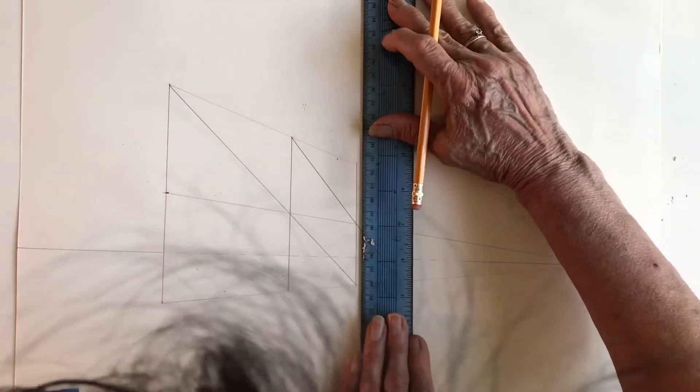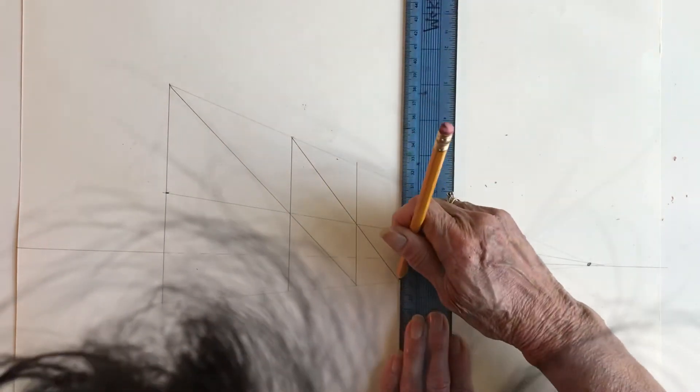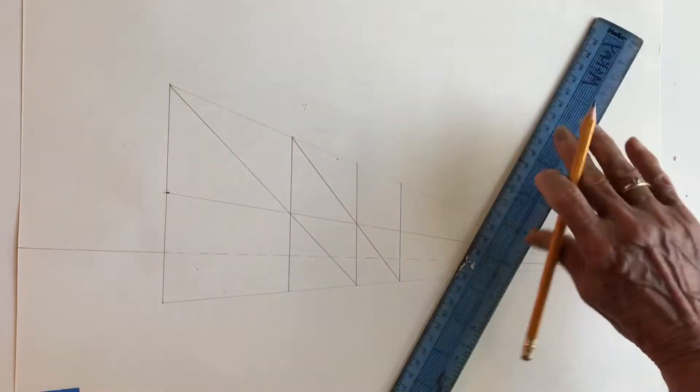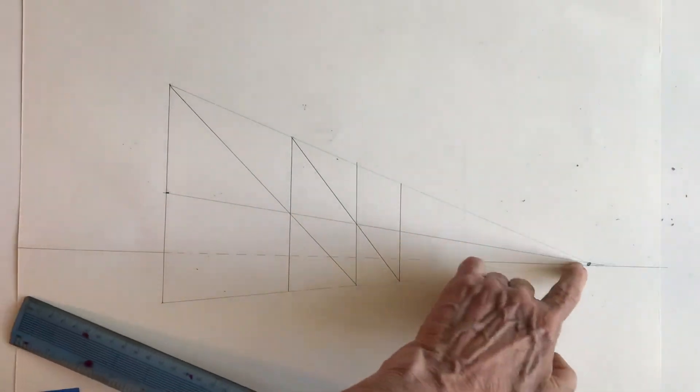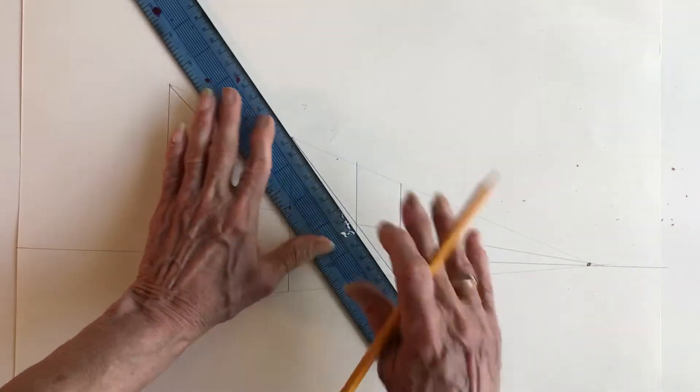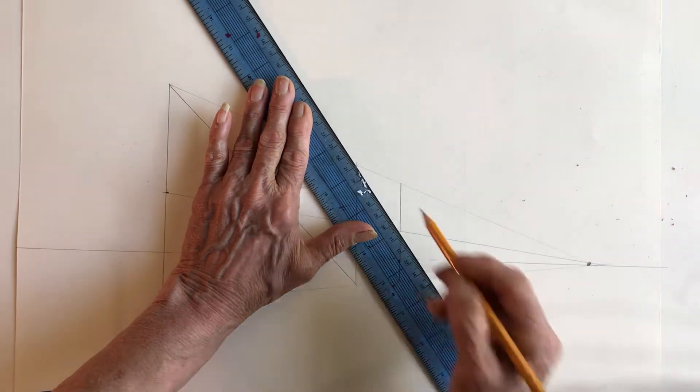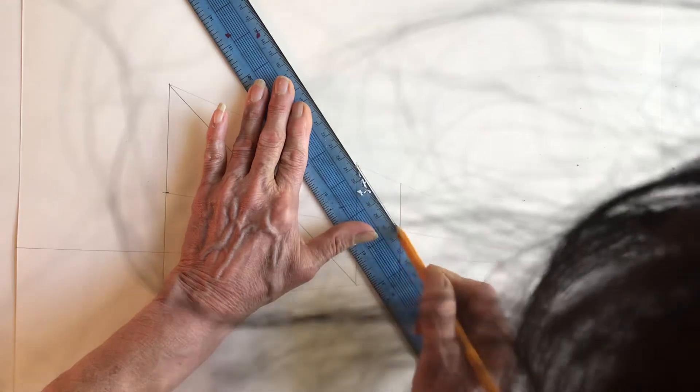And you want to make sure that you keep your lines pretty parallel. And that you try to really hit your vanishing point. Because when you start to have sort of small errors, they multiply as you go along. And it can show up in the drawing.